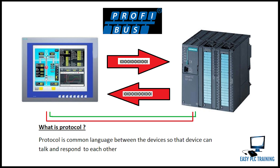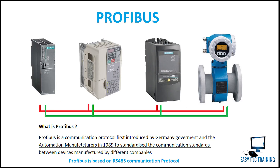What is PROFIBUS? First, what is a protocol? A protocol is a common language between devices so that devices can talk and respond to each other. PROFIBUS is a communication protocol first introduced by the German government and automation manufacturers in 1989 to standardize the communication standards between devices manufactured by different companies.